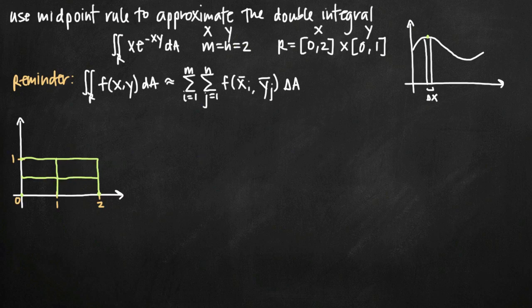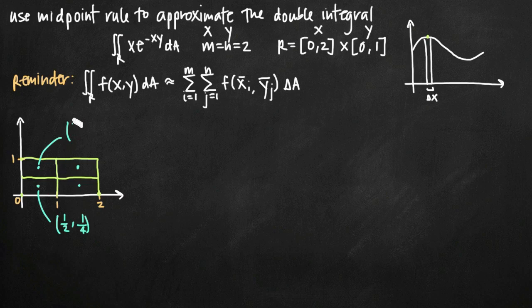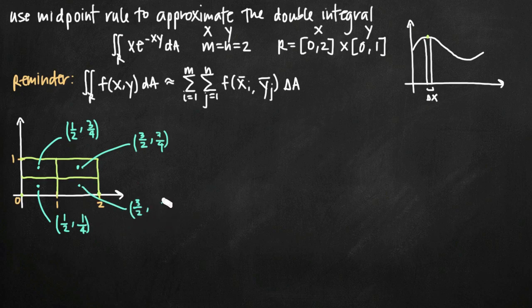With our four rectangles established, we find the midpoint of each one. The first midpoint has x halfway between 0 and 1, so x equals one half, and y halfway between 0 and one half, so y equals one fourth. The second has x equals one half and y halfway between one half and one, so y equals three fourths. The third has x halfway between 1 and 2, so x equals three halves, and y equals three fourths. The fourth has x equals three halves and y equals one fourth.